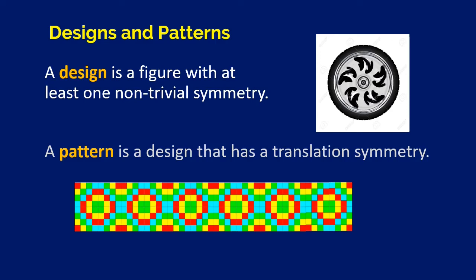Designs and patterns. A design is a figure with at least one non-trivial symmetry. And a pattern is a design that has, this one is important, a pattern is an example of a design, but it is a special kind of design because it will always involve a translation symmetry. This is an example of a design because it has a symmetry. You get the same image back to itself when you rotate it. This is an example of a design, but this is not a pattern because it has no translation symmetry, whereas this one over here is a pattern because you get back the same figure if you translate it. Of course, we assume that this pattern will continue.